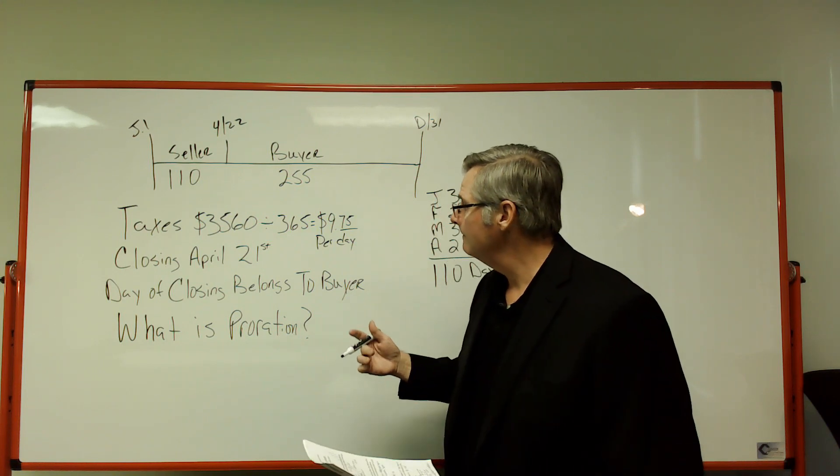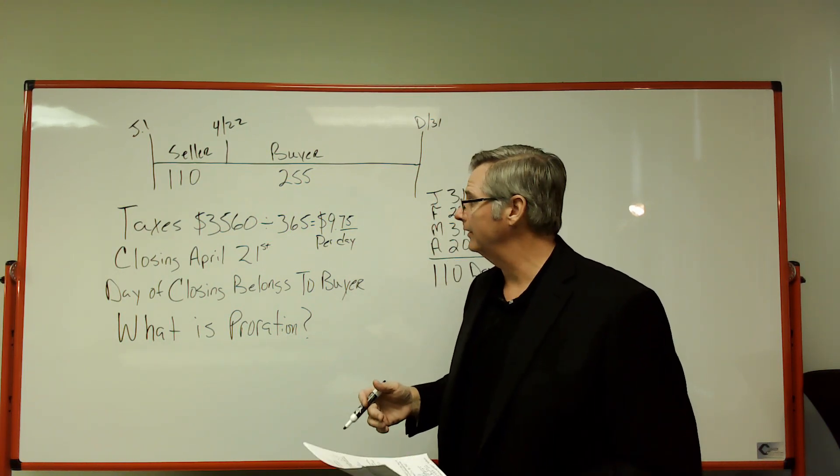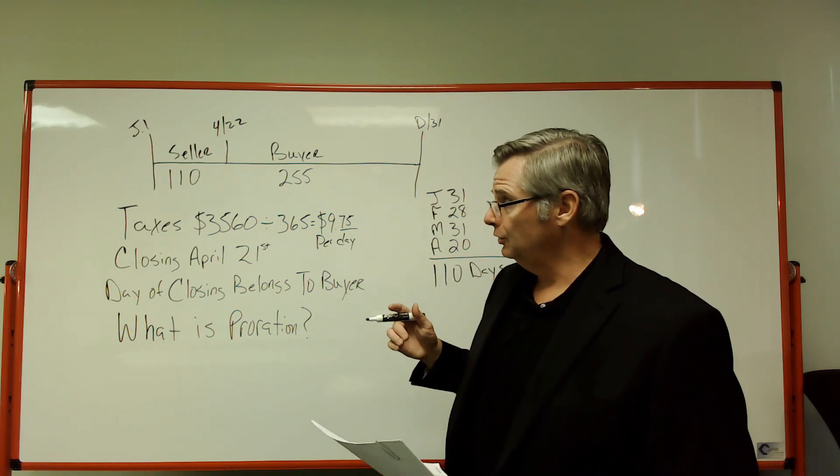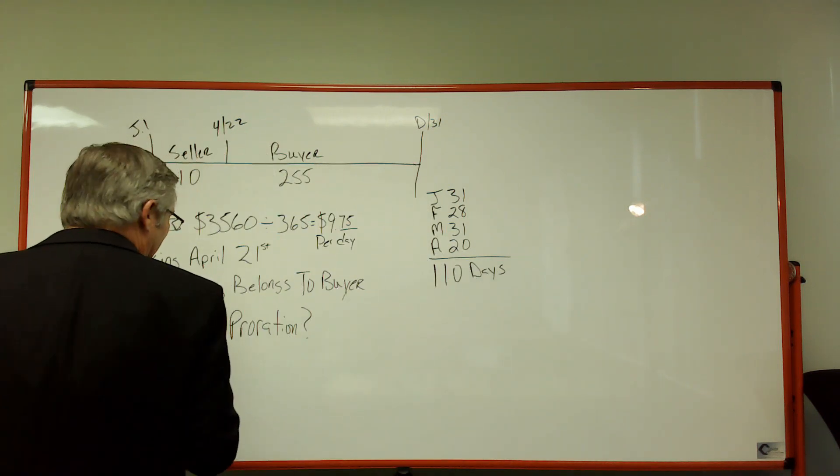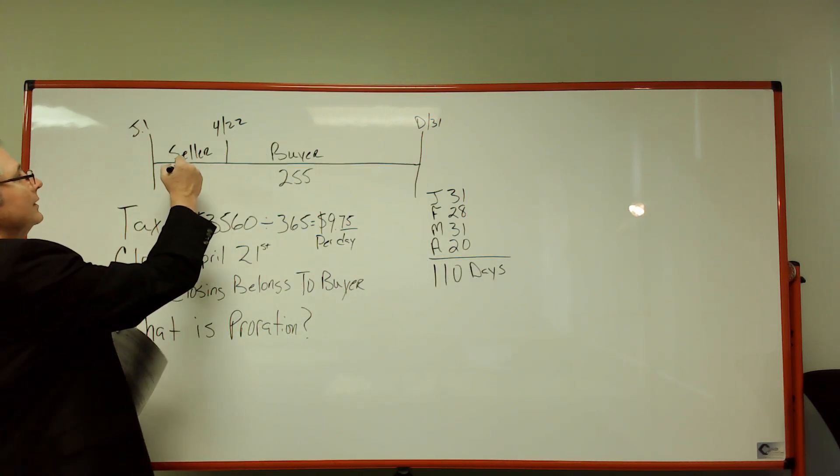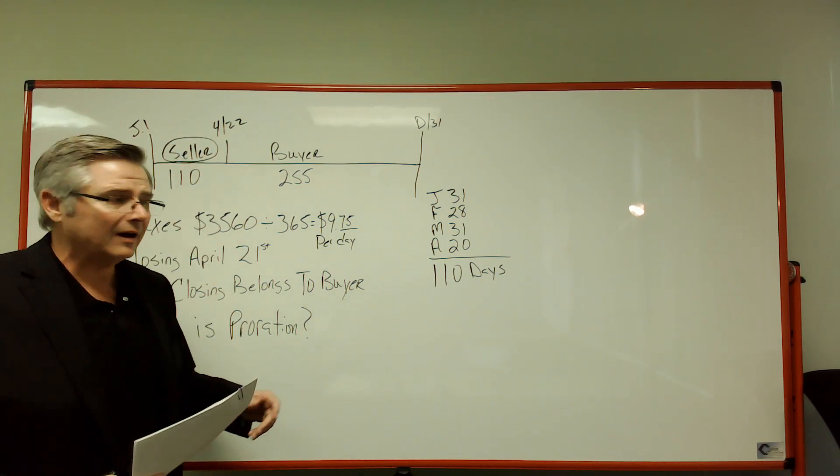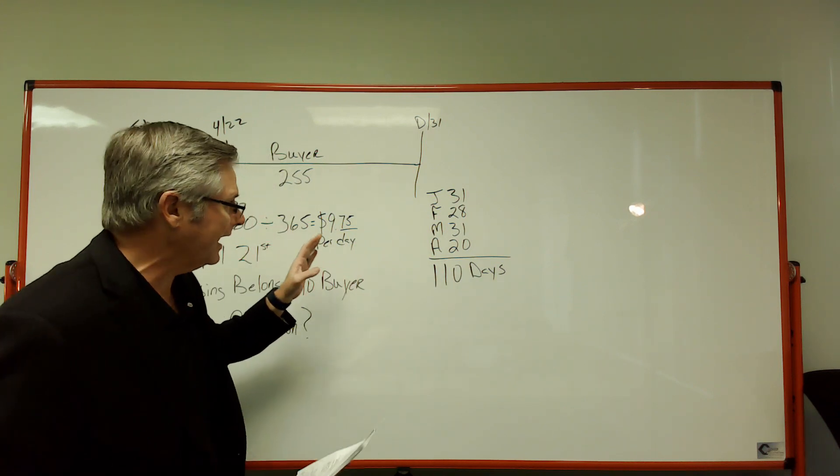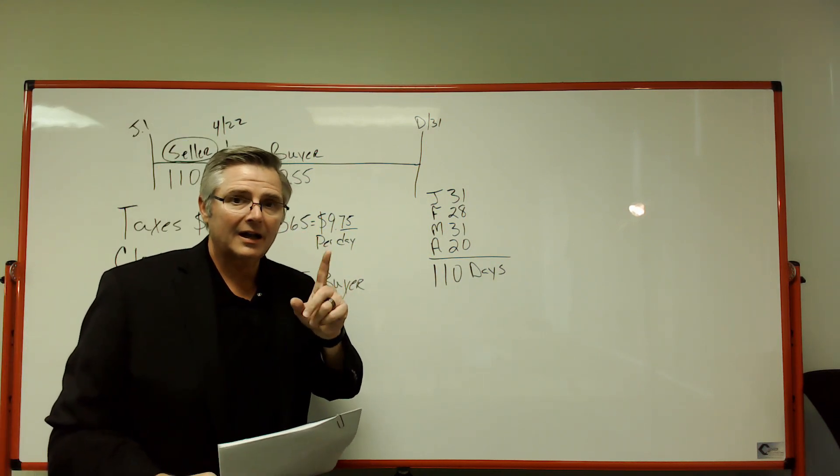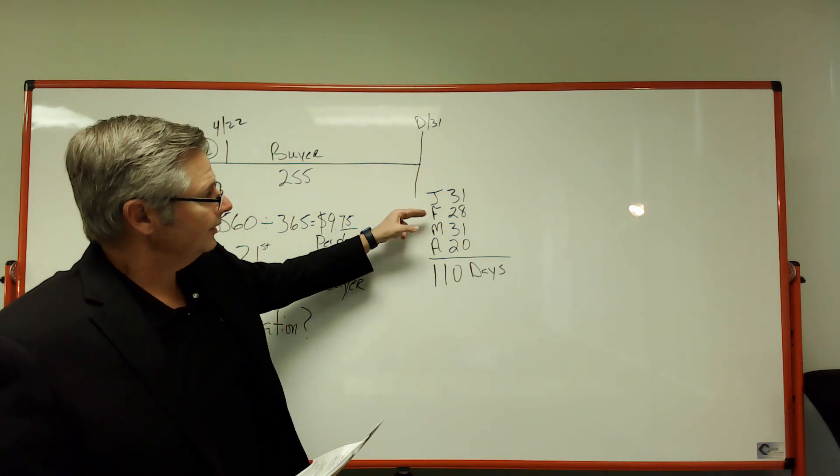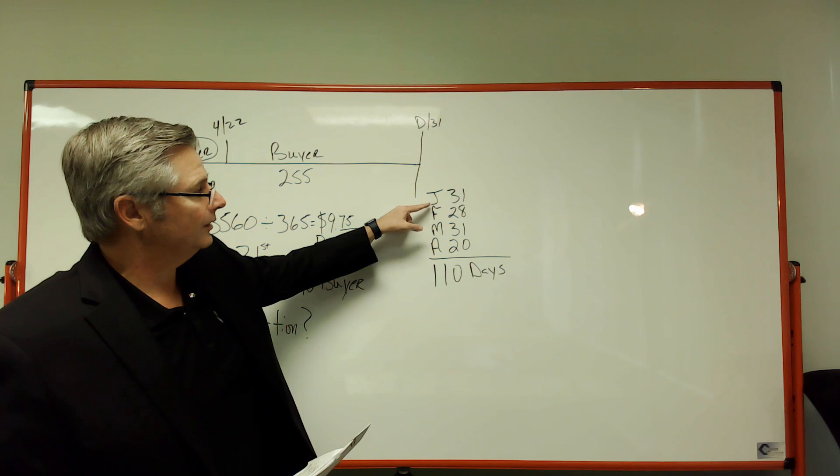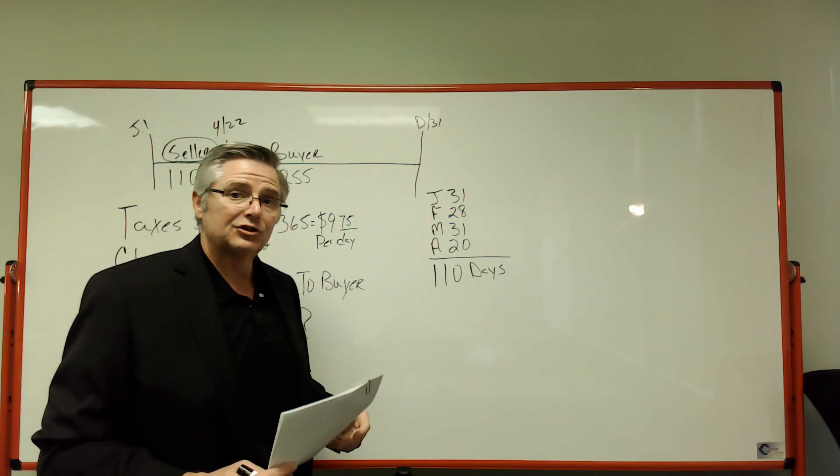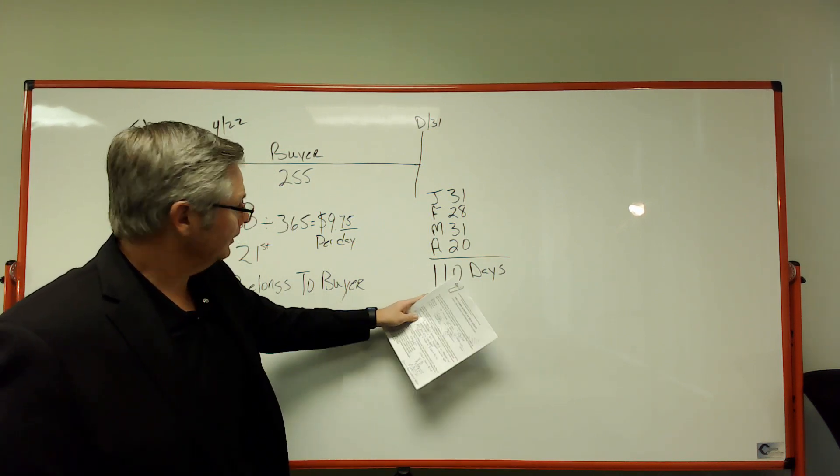Now one thing to remember on property taxes: you are going to use the seller's day. So what that means is how many days does the seller occupy that property? I've already gone ahead and figured these out for you. It says in the question that the buyer is going to own the house on the 22nd, so you got to make sure you don't use that day. So you got January, February, March, and April. 31 days in January, 28 February, 31 in March, and 20 days that the seller owns the house for. 110 days is how long they own that house.